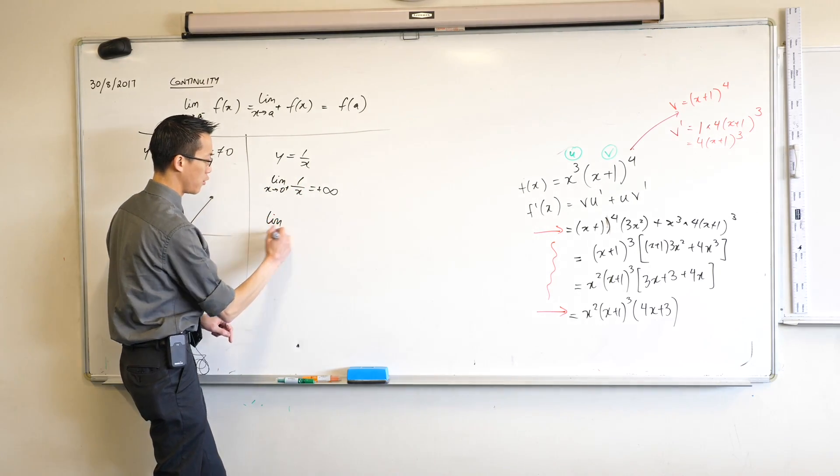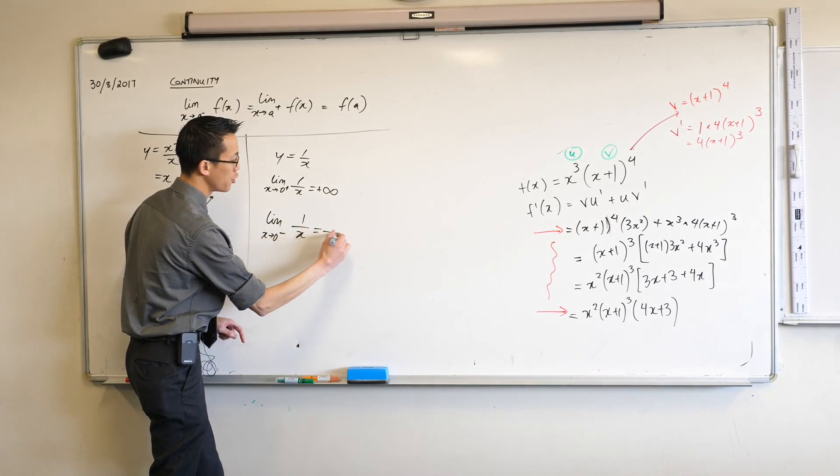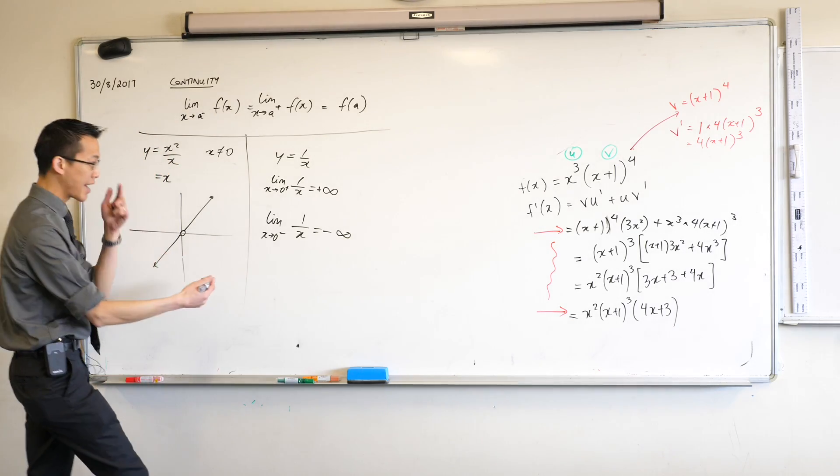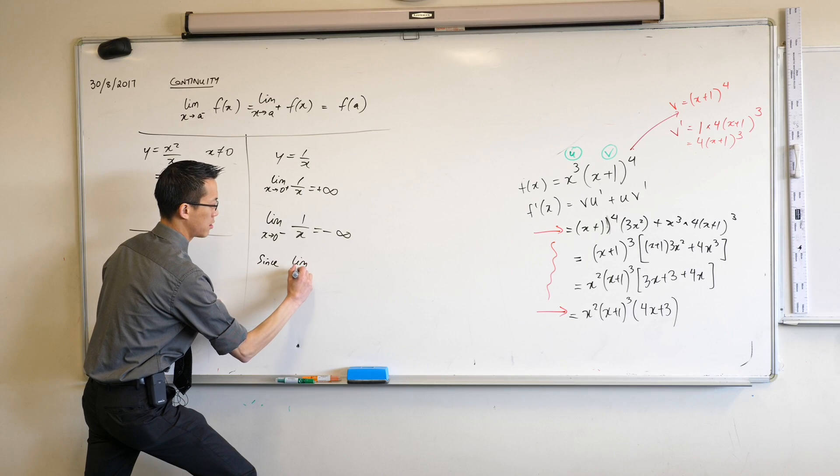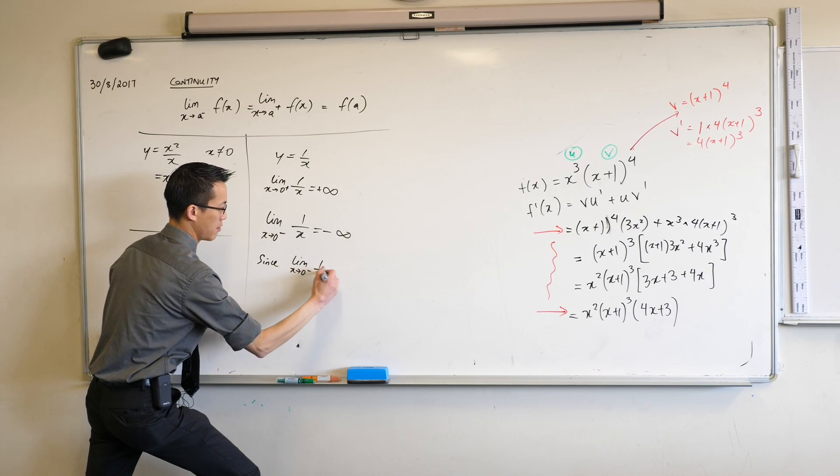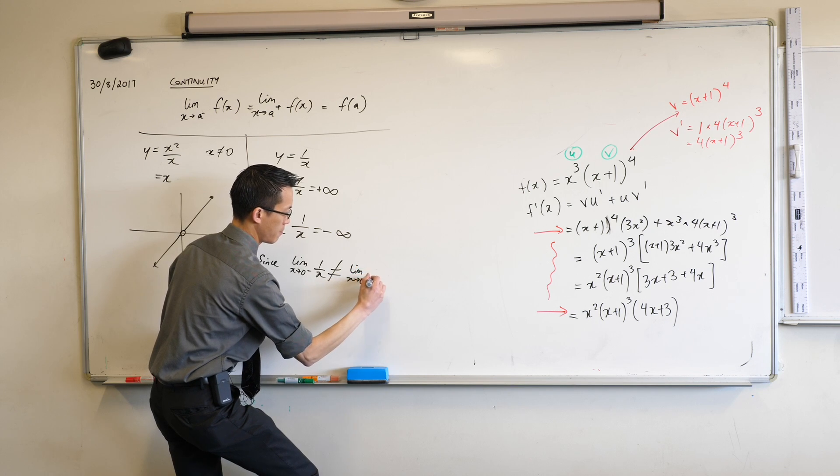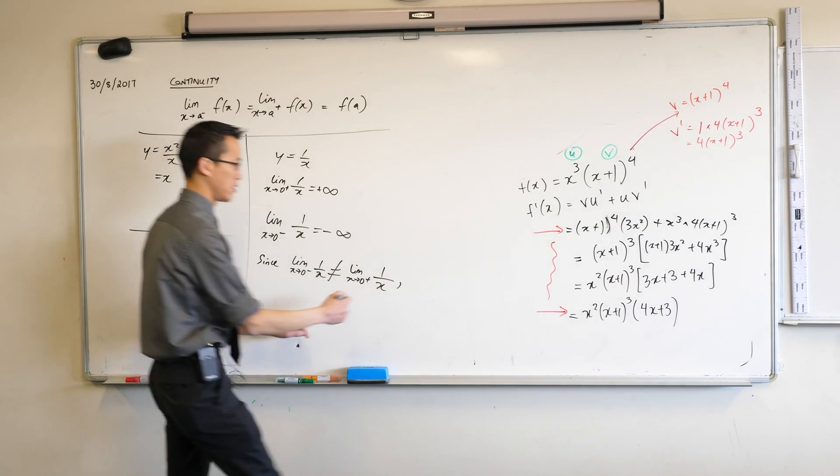It only happens when you're coming from the right-hand side because then you've got a positive divided by a positive. Alternatively, if you approach from the other side you don't go to the same thing, you go to a negative value. So therefore I can say since one limit is not equal to the other limit, therefore 1 over x is not continuous.